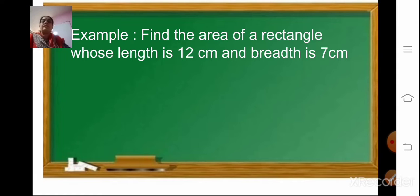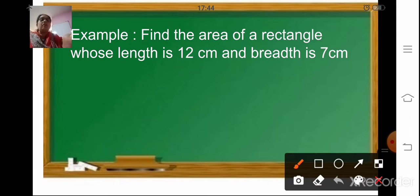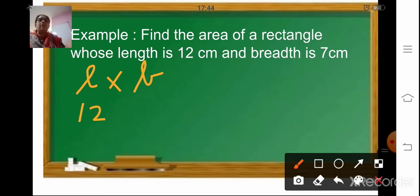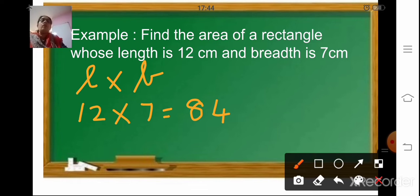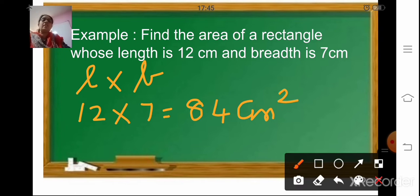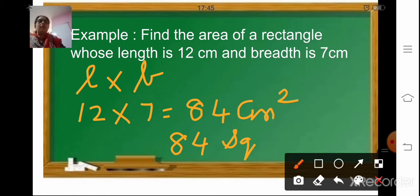Let us start with an example. Here it is to find the area of a rectangle whose length is 12 centimeter and breadth is 7 centimeter. Using the formula — area is length into breadth — so 12 multiplied by 7 is 84. While writing the area you will write it as centimeter square. Area is always written in square, so your answer is 84 centimeter square, or you can also write it as 84 square centimeter.